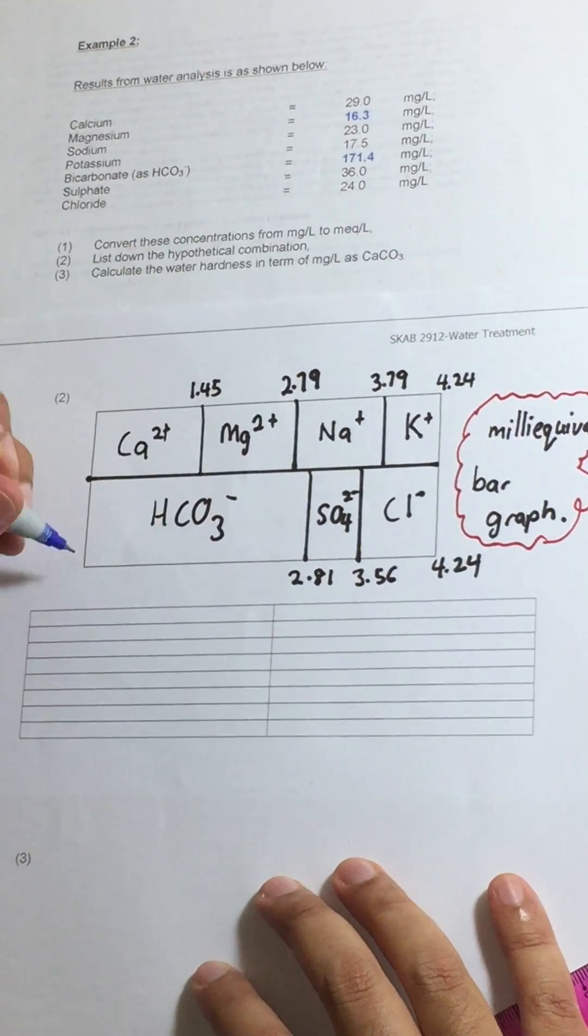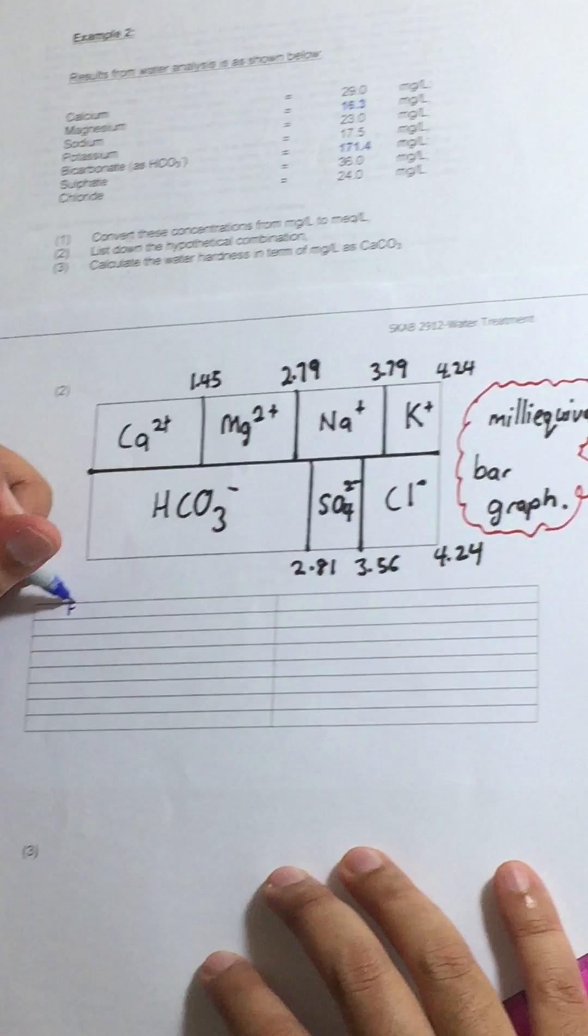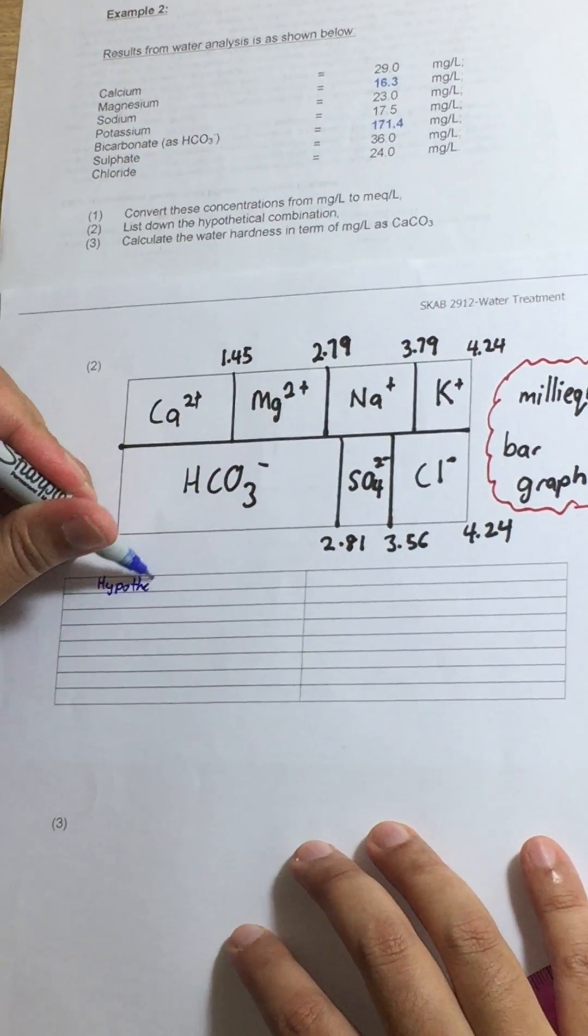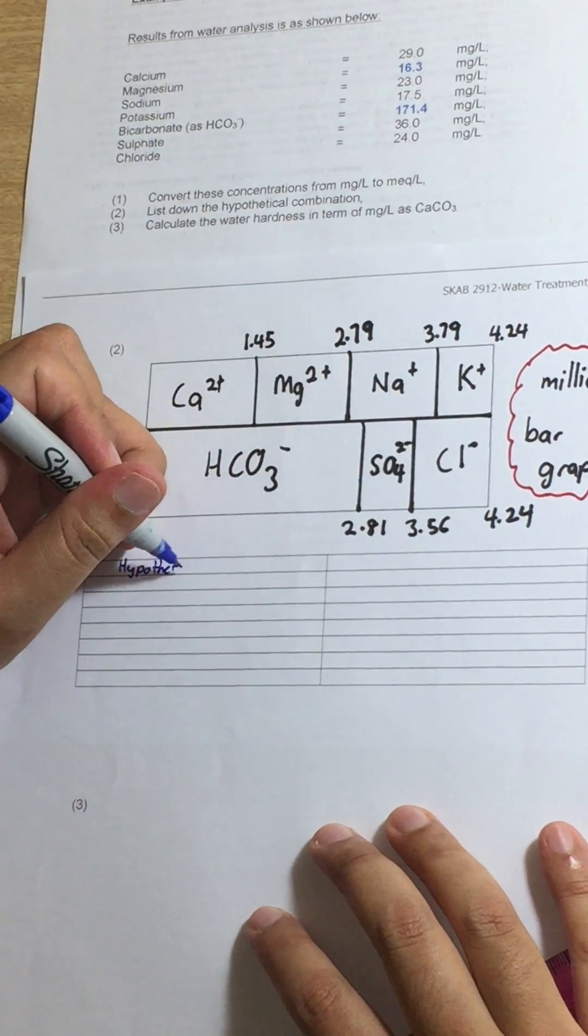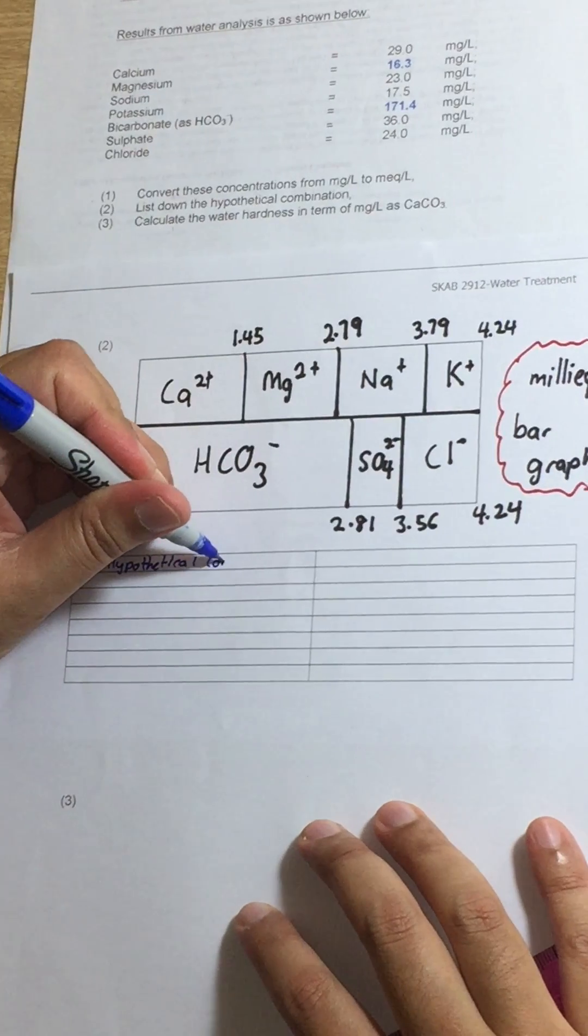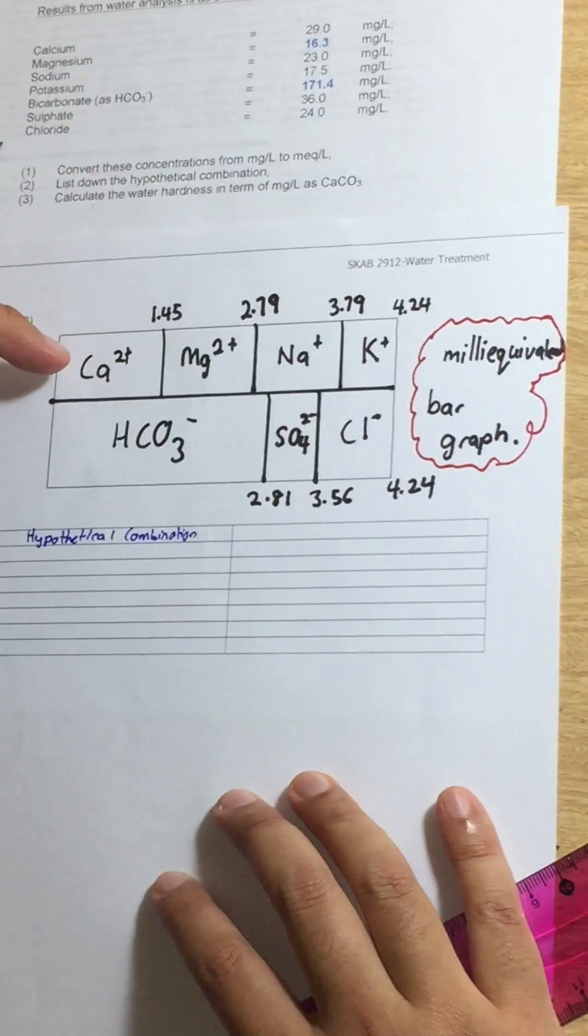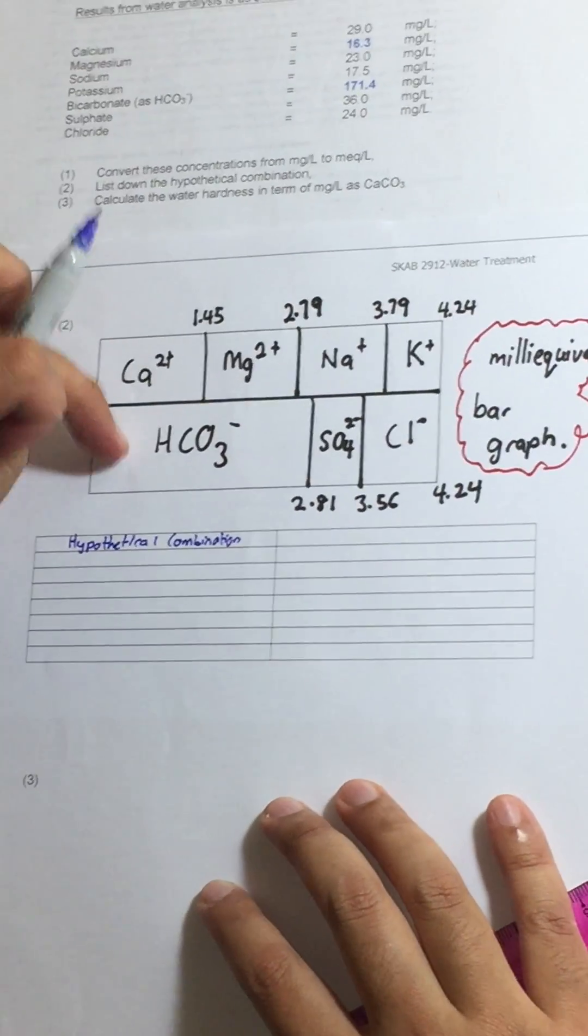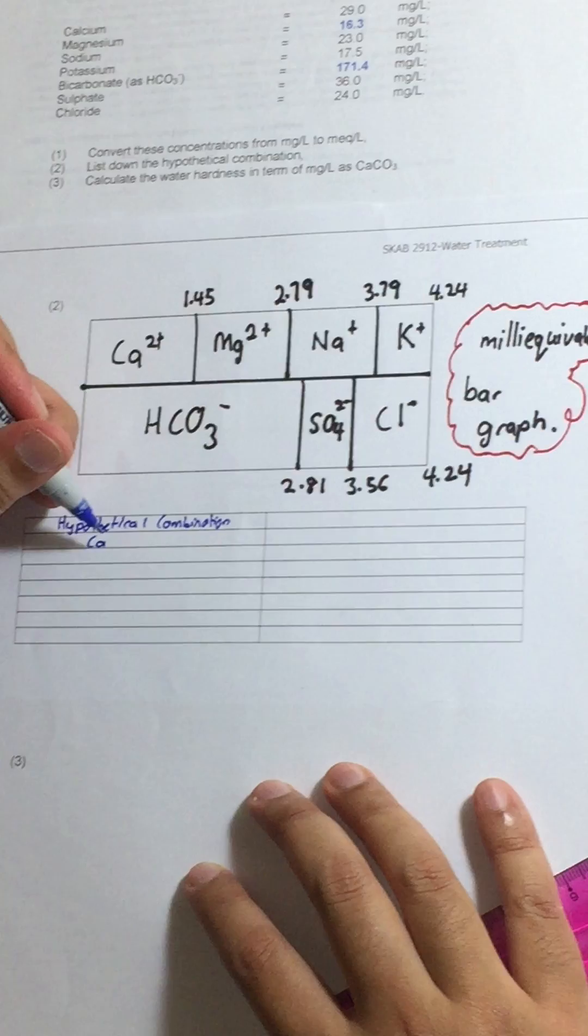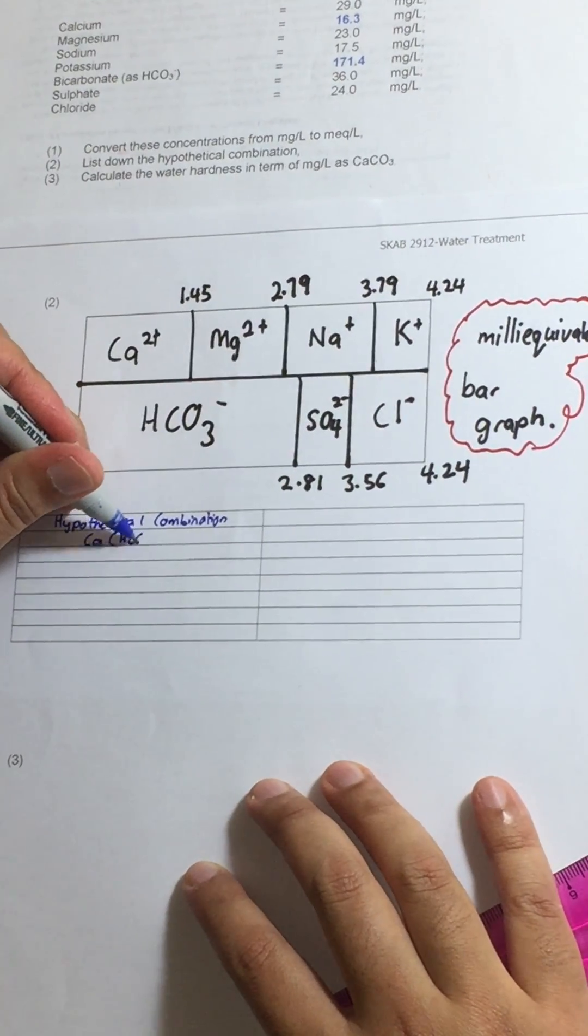Now we need to list down the hypothetical combination. What do we have? We have calcium bicarbonate. So write it down, calcium bicarbonate.